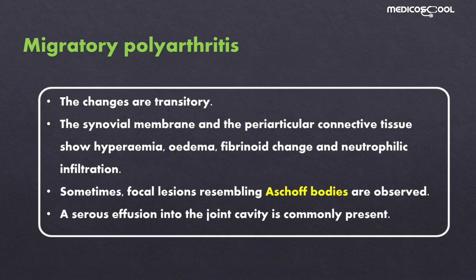Now we will study the organ-wise involvement of the body in acute rheumatic fever, looking at the microscopic and gross changes in the main organs involved. These include the joints, the heart, the subcutaneous tissue, and the brain.